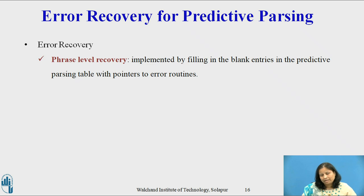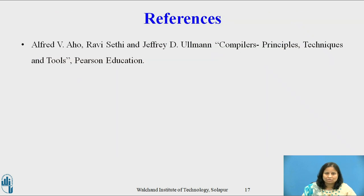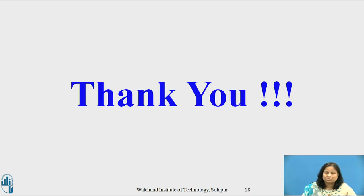The second error recovery mechanism is phrase level recovery. Phrase level recovery is implemented by filling in blank entries in the predictive parsing table with pointers to error routines. These routines may change, insert, or delete symbols on the input and issue appropriate error messages. This concludes the presentation. Thank you.